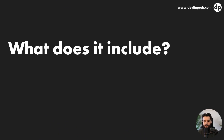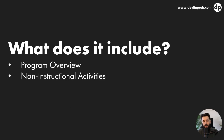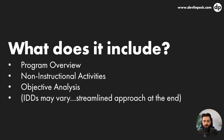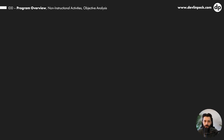So what does an instructional design document include? The big one is the program overview. After that, we'll have some non-instructional activities — this is more about motivation and letting people know what the objectives are and helping them apply what they're learning afterwards. And then finally, objective analysis. These are the three components I learned in my master's program. I'll also share a streamlined approach of what I think the essentials are at the end of this video.